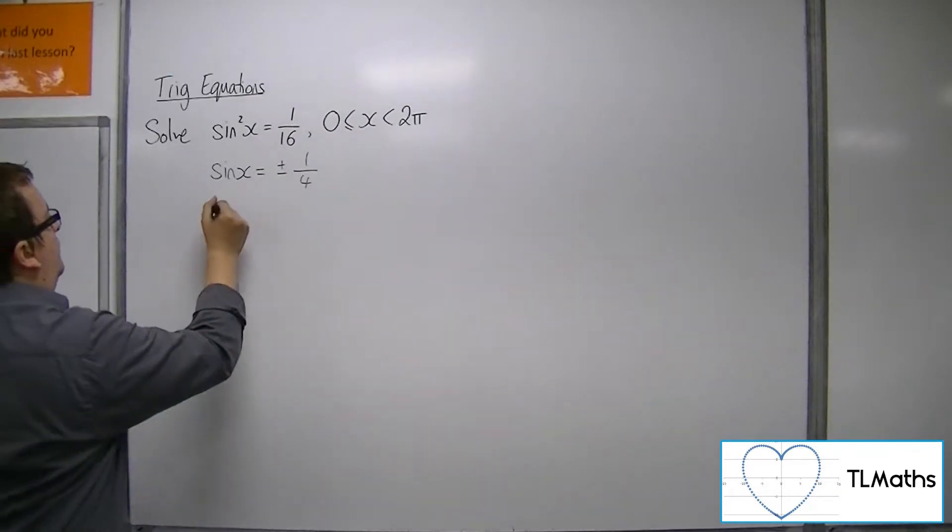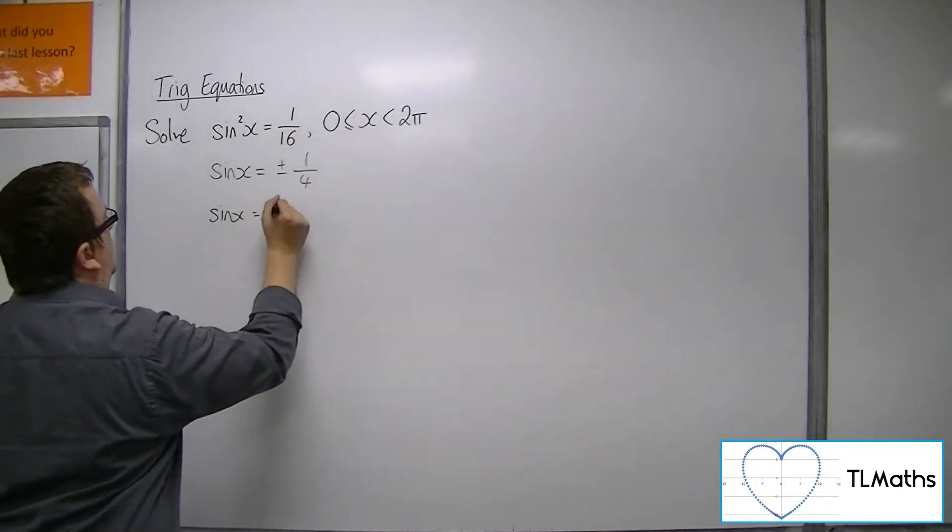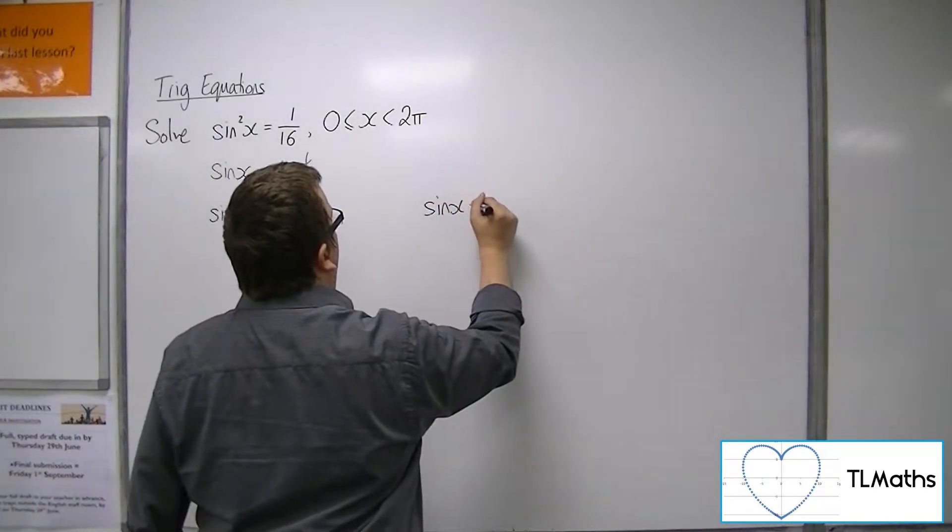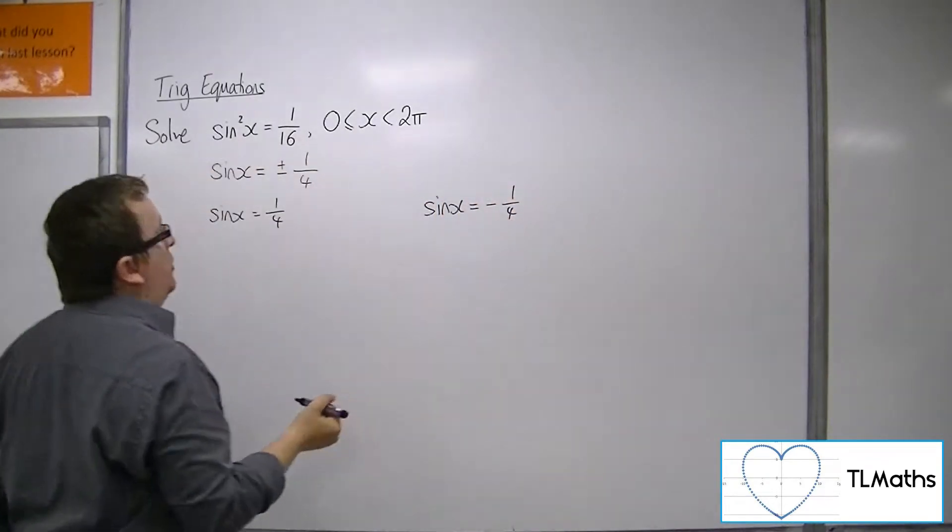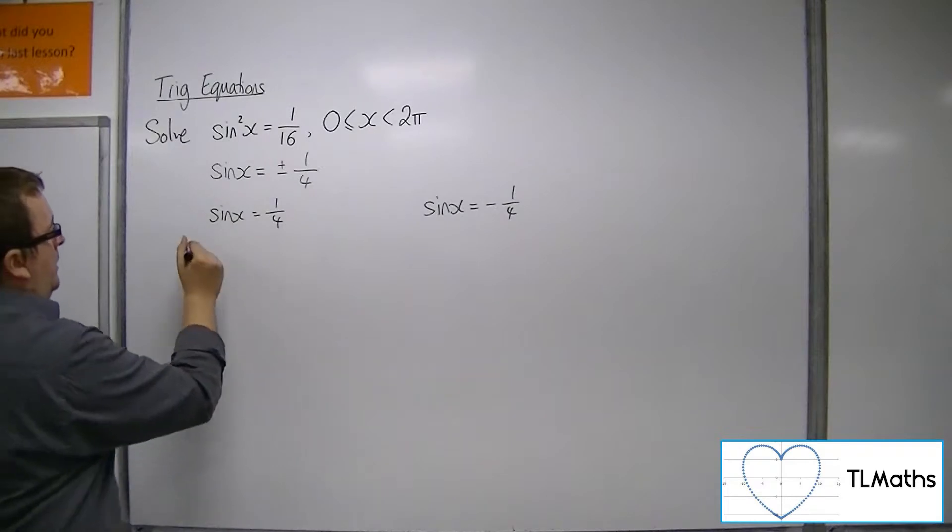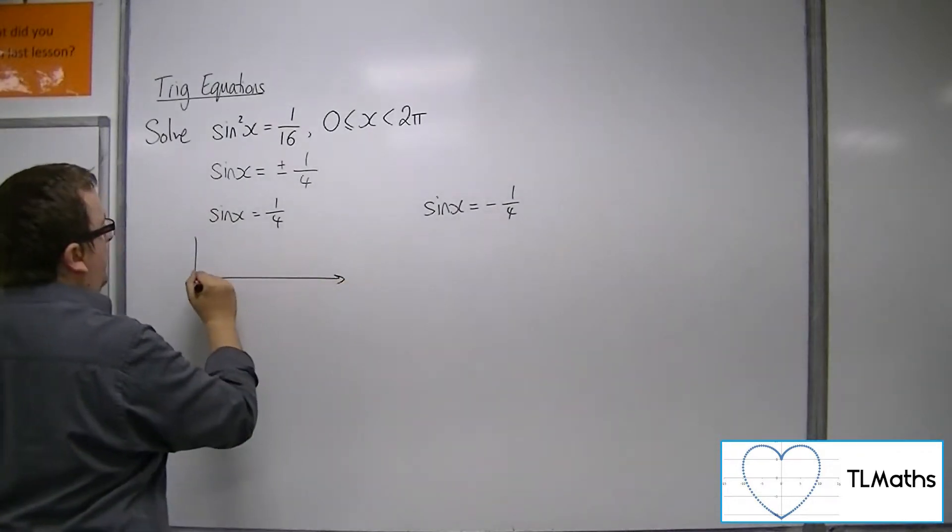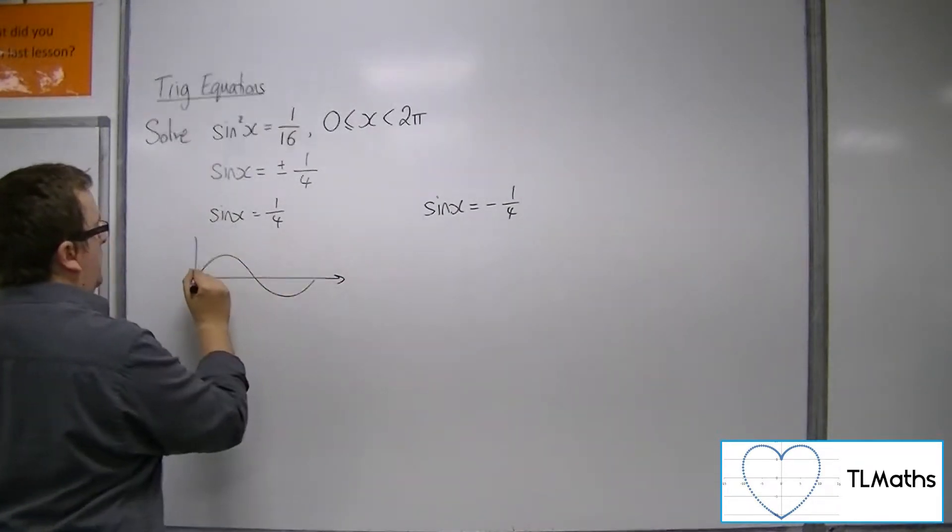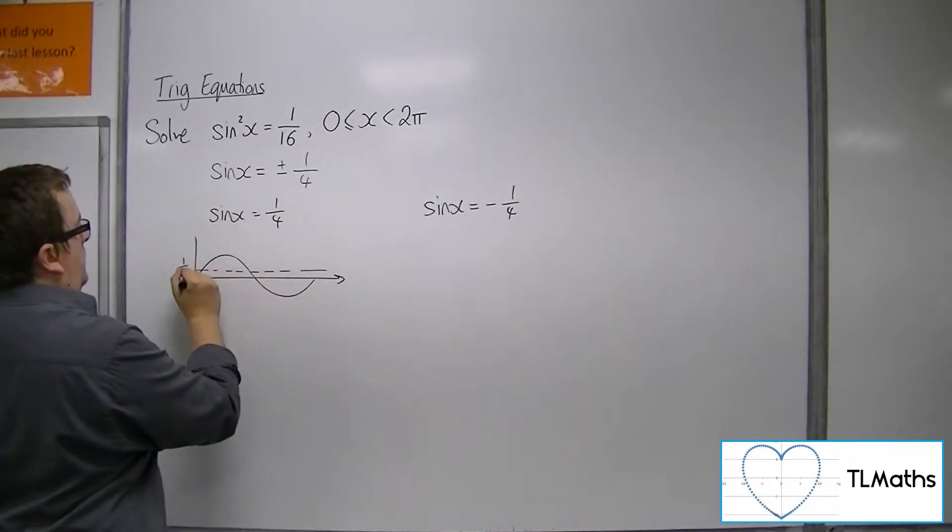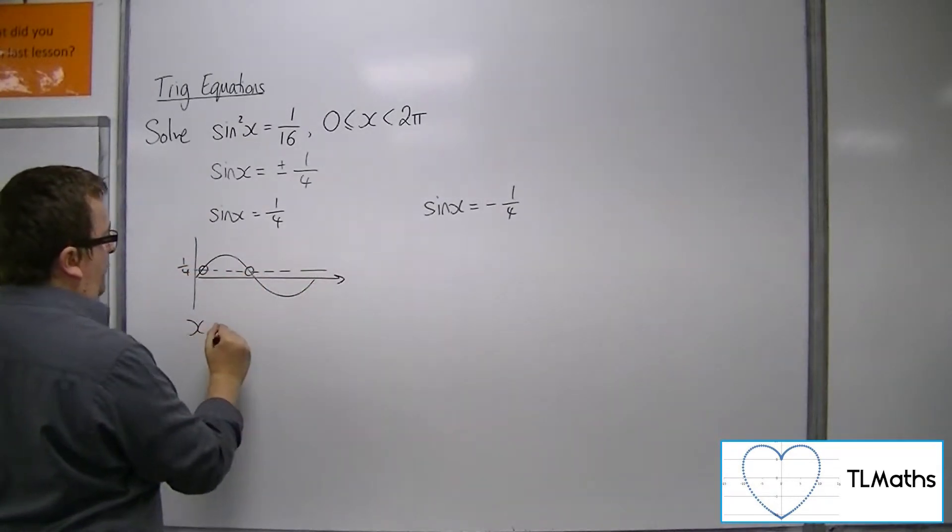So I need to solve sin x = 1/4 and sin x = -1/4 between 0 and 2π. A quick sketch of sine reveals that there are two solutions that I'm looking for.